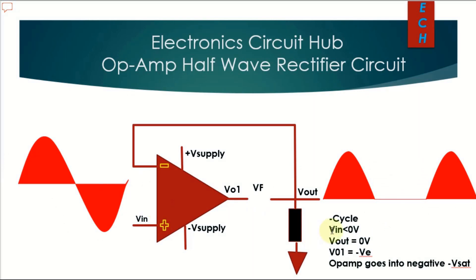For the negative half cycle, when V-in is less than zero volts, the diode is in reverse bias. To reverse bias the diode you need a negative voltage at the diode anode, which means V-O1 is negative. In such a case the output is zero volts, and the same zero-volt output appears at the negative terminal.